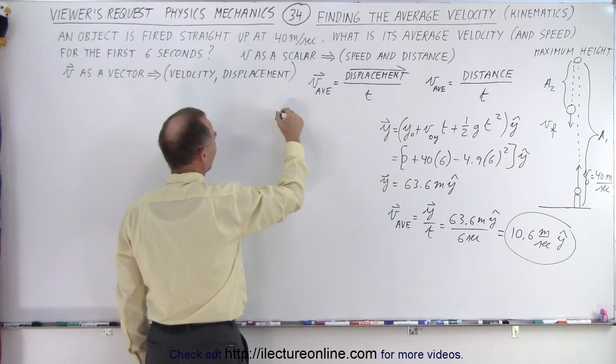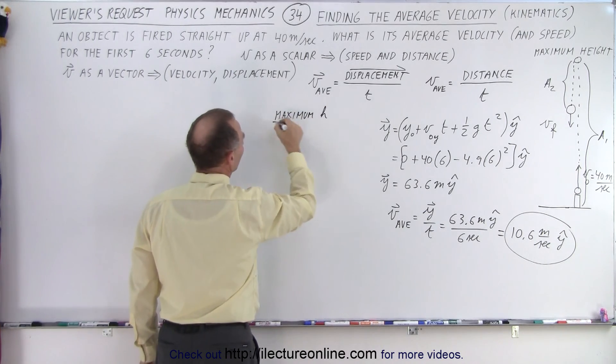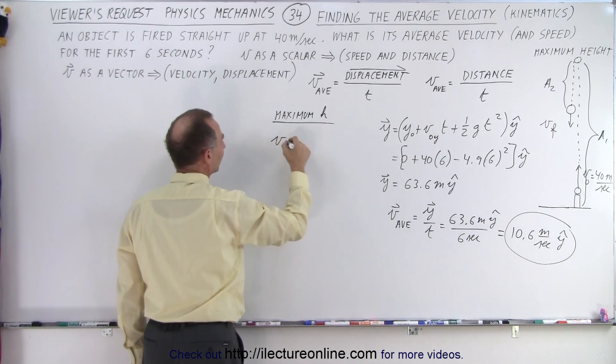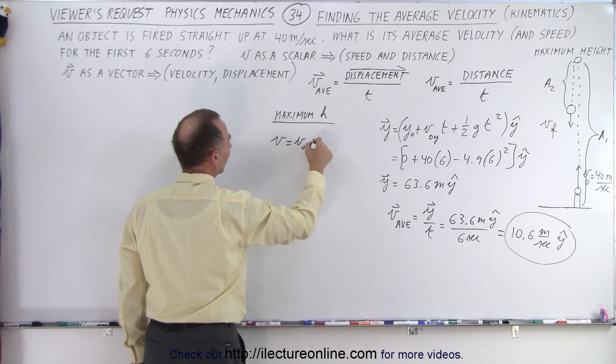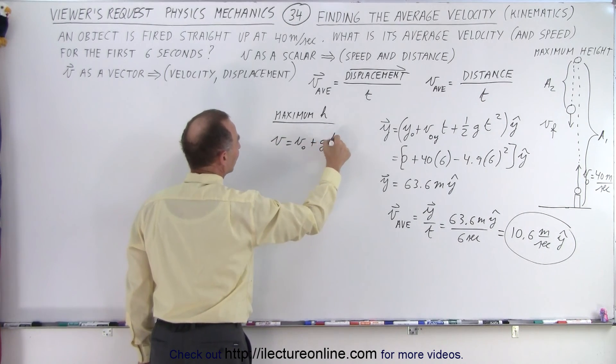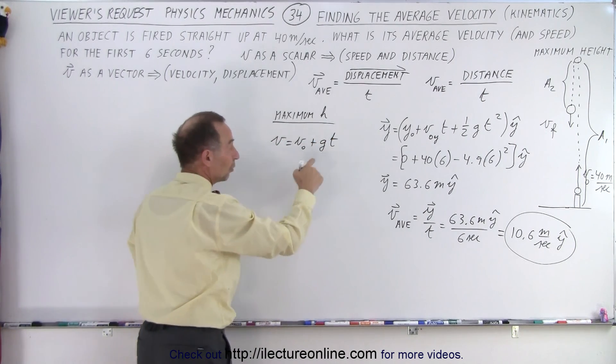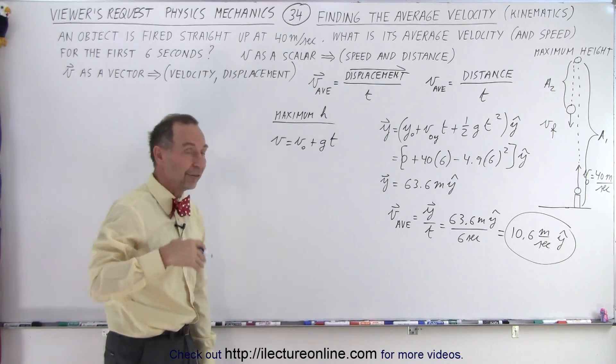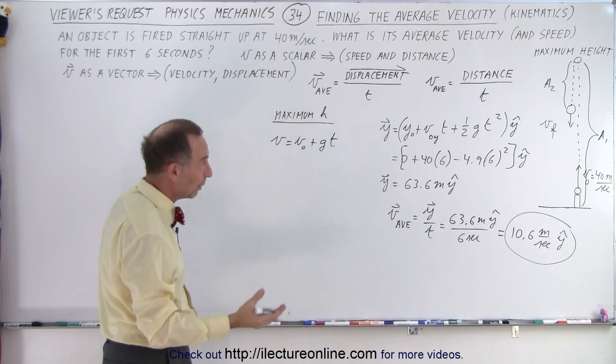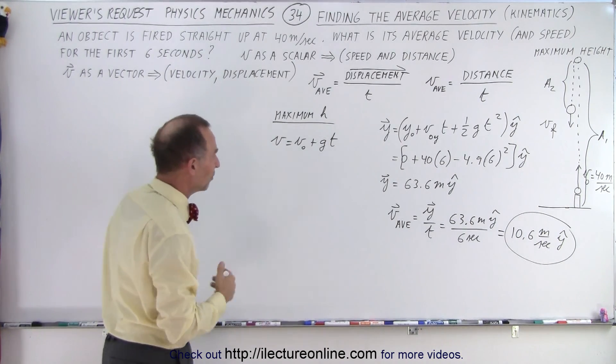So to find the maximum height, what we can do is we can use this equation, v equals v sub naught plus g times t. Because this equation will give us the time that it takes to get to the maximum height, and then we can use that time to find the actual maximum height.